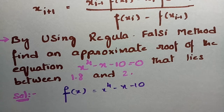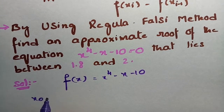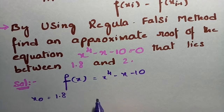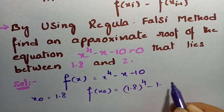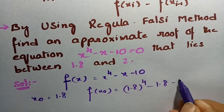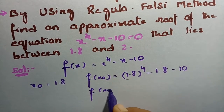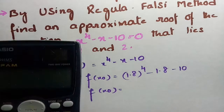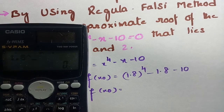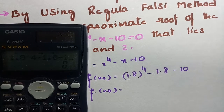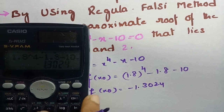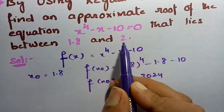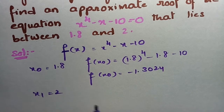First, x₀ is given as 1.8. So f(x₀) = 1.8⁴ - 1.8 - 10, and the value of f(x₀) is -1.3024.